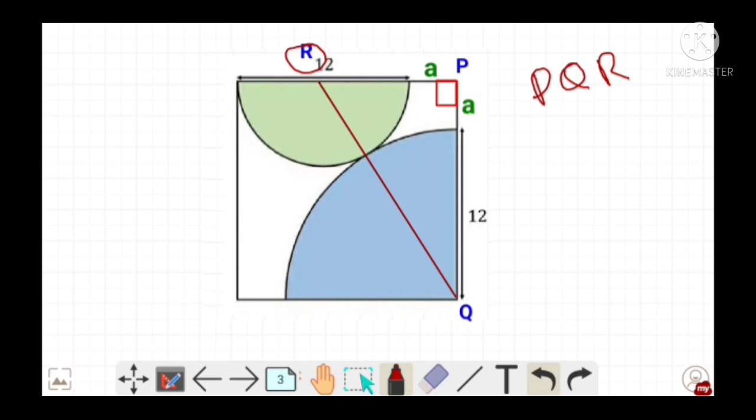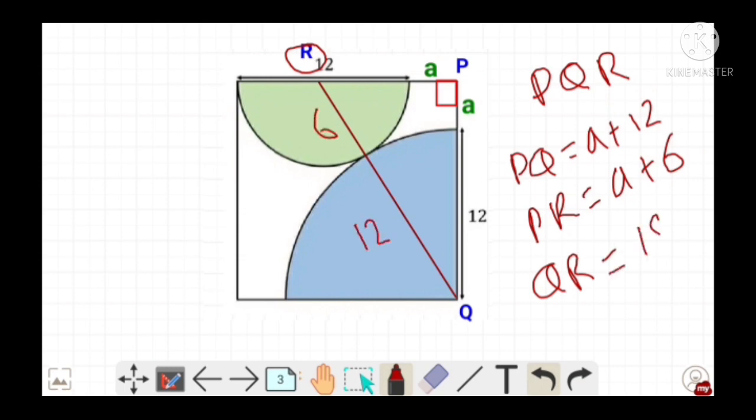Now in triangle PQR the length of side PQ is equals to A plus 2L. Also the length of side PR is equals to A plus 6. Also the length of side QR is equals to 6 plus 2L which is equals to 18 units.